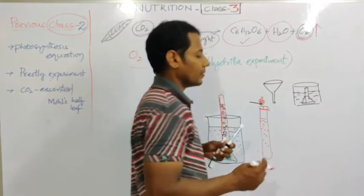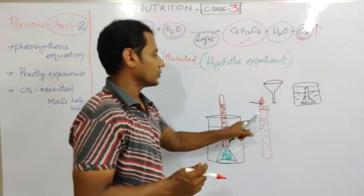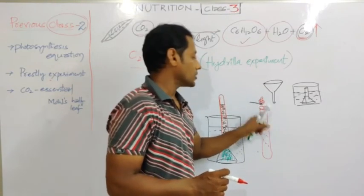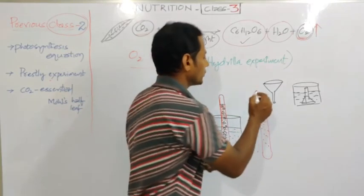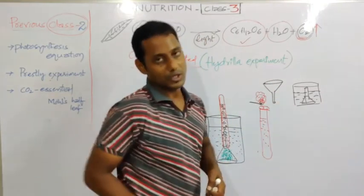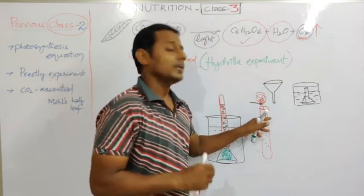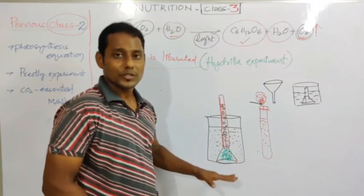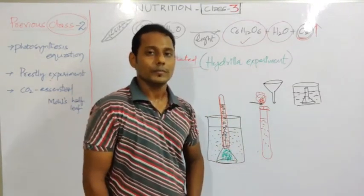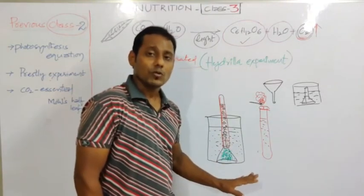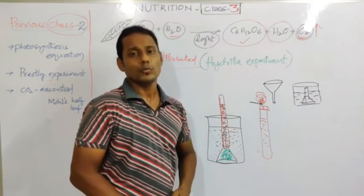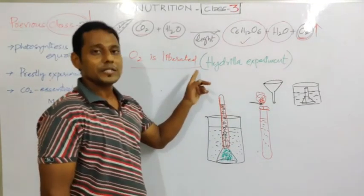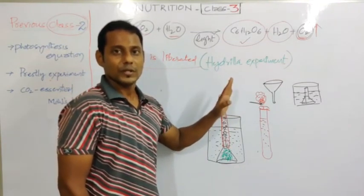You just lift your finger - the air or gas which is present at the top of the test tube will escape out. You introduce the burning matchstick - if the gas reignites the matchstick, that confirms it is oxygen. This experiment tells us that the gas which is liberated or released in the photosynthesis process is oxygen. Photosynthesis process releases oxygen - this is clear.